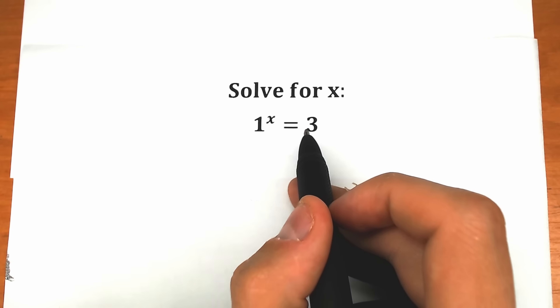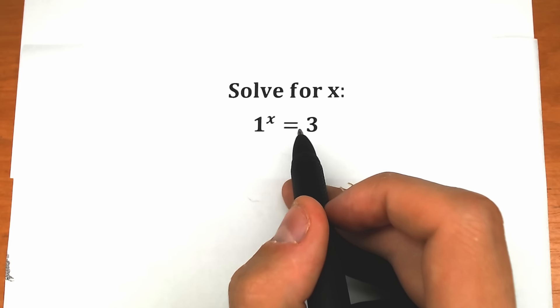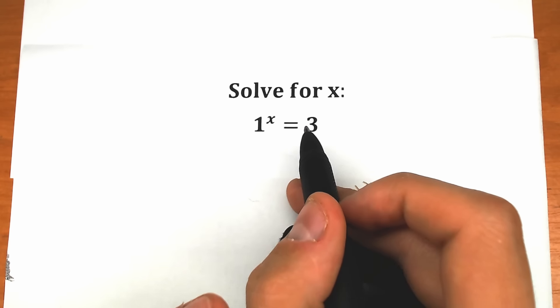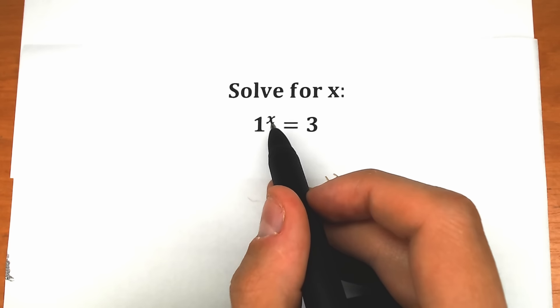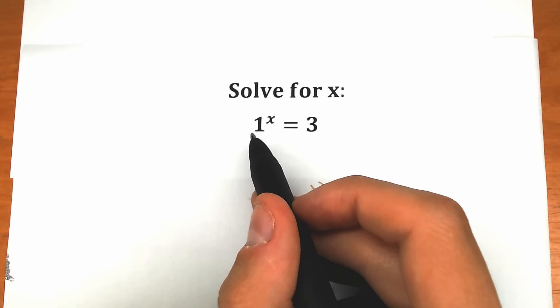The challenge is: 1 to the x equals 3. A lot of students might be saying, hey, this is absolutely impossible. 1 to the x every time is equal to 1, so how is it possible that we have 3 here? And my answer is: in math, everything is possible.